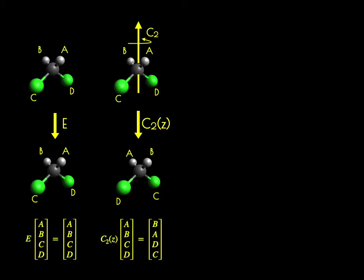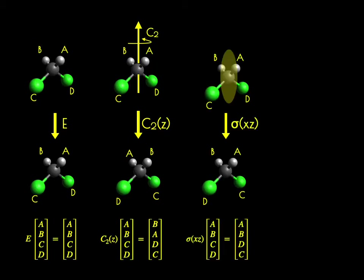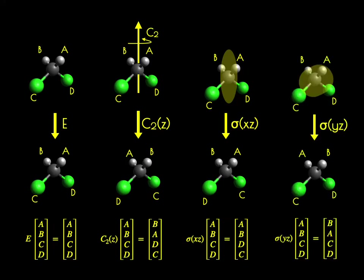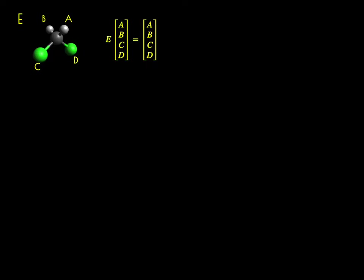For C2 along Z, A and B switch places and C and D switch places, as specified in the resulting vector. For sigma XZ, A and B stay in the same place while C and D change places. For sigma YZ, B and A change places while C and D remain the same. Looking more carefully, the E representation can be represented by a 4×4 matrix telling atoms which positions they need to move to.